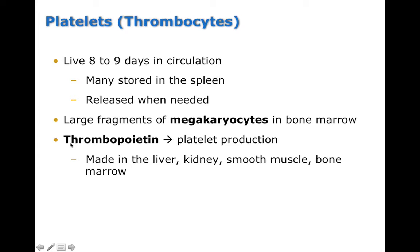Many platelets are stored within the spleen and liver and can be released when needed or if levels are low. Large fragments called megakaryocytes, found in bone marrow, have little extensions that pinch off pieces of their plasma membrane — those packets become the platelets or thrombocytes. There's a hormone called thrombopoietin that increases platelet production by stimulating megakaryocytes, and it's made by the liver, kidneys, smooth muscle, and bone marrow.